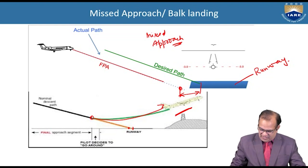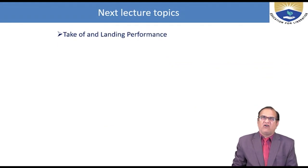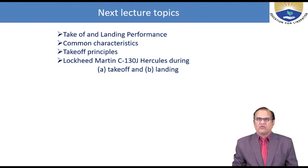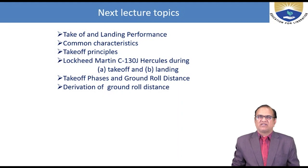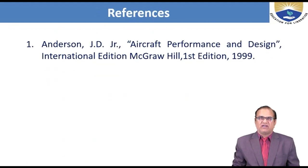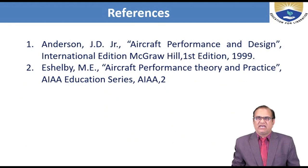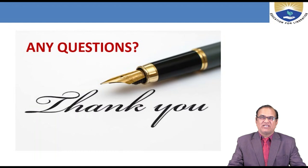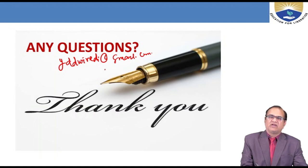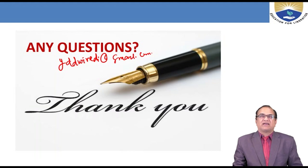In the next lecture I will be discussing takeoff and landing performance common characteristics, takeoff principles using the Lockheed Martin C-130 Hercules as an example, takeoff phases and ground roll distances, derivation of ground roll distances, and forces during takeoff using the average acceleration method. References include Anderson J.D. Jr., Aircraft Performance and Design, International Edition, McGraw-Hill, First Edition 1999, and S.L. by M.E., Aircraft Performance Theory and Practice, AIAA Education Series. Any questions are welcome — please like and subscribe, and email yddivedi@gmail.com with comments.